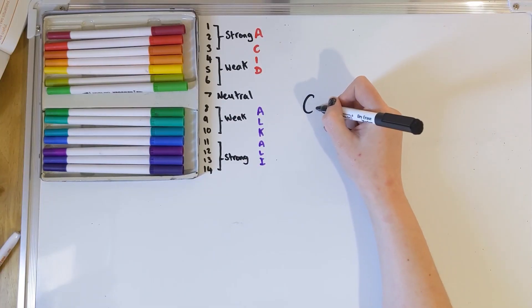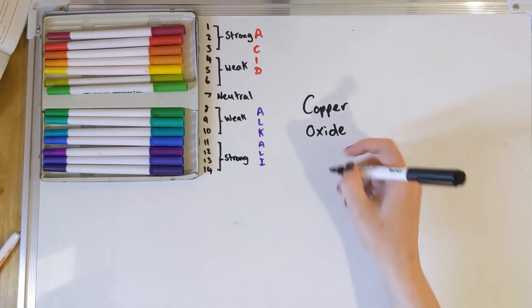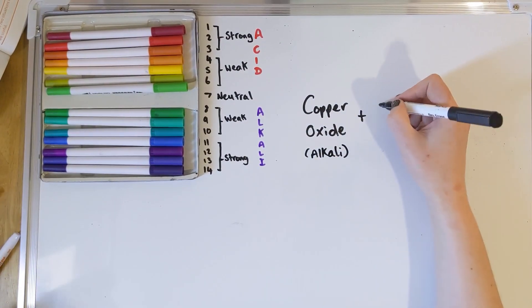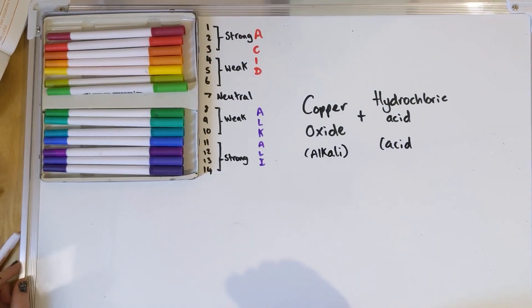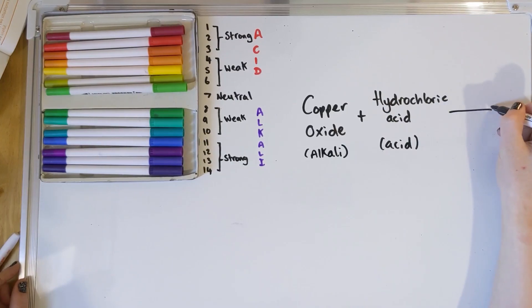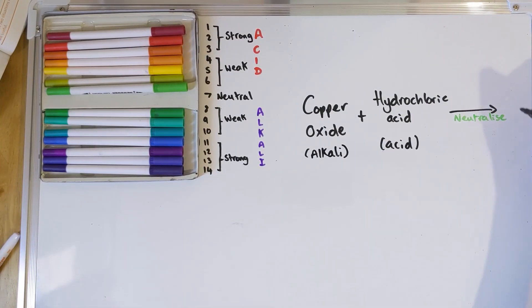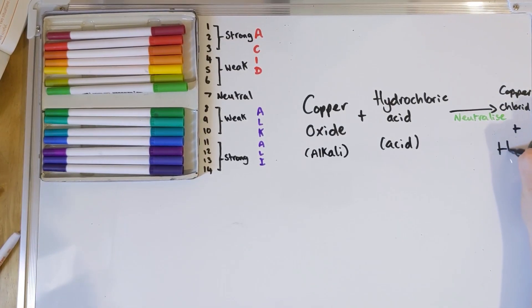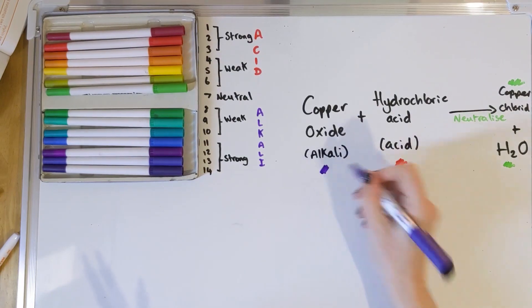Let's look at a specific example of neutralisation. When you add copper oxide — things made with metal are usually alkali, so this is our alkali — to some hydrochloric acid, which is the acid (it's also the same acid in your stomach), they will neutralise to make a neutral compound called copper chloride. You also make a little bit of water. Copper chloride will be neutral, and water as we know is also neutral — so acid plus alkali makes a neutral solution.